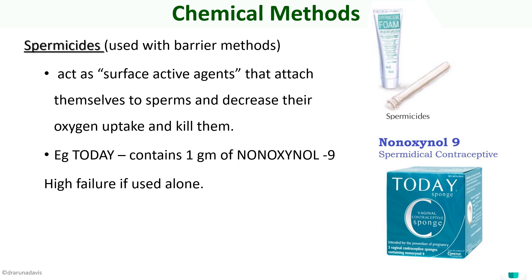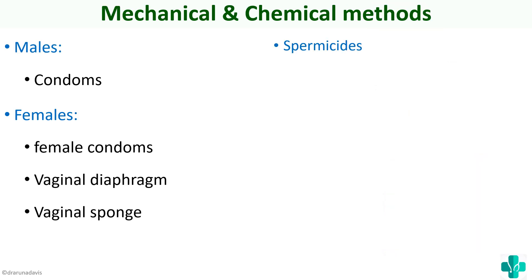In this video we discussed the male mechanical method — condoms — and for females: female condoms, vaginal diaphragm, and vaginal sponge. We also talked about spermicides and how they act. It's a small topic and I hope the concept is clear. Thank you.